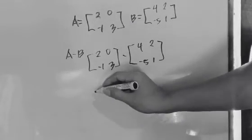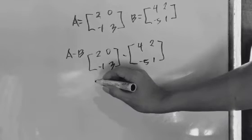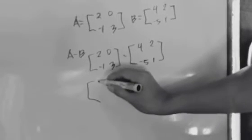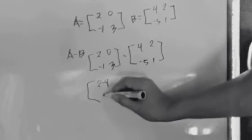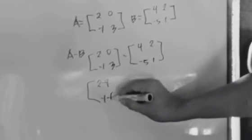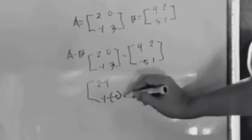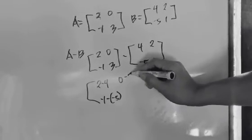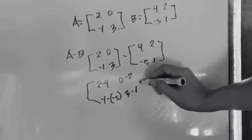So we have 2 minus 4, negative 1 minus negative 5, then 0 minus 2, and 3 minus 1.